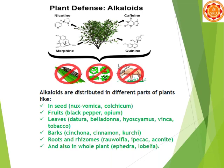Alkaloids are distributed in different parts of plants. In seeds, we have nux vomica. In fruits, we have black pepper and opium, obtained from Papaver somniferum. In leaves, like datura and belladonna. From Vinca, we get vincristine and vinblastine, which have anti-cancer properties.